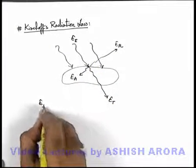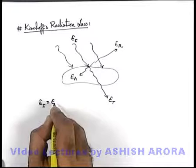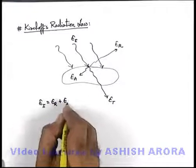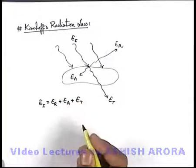And total energy which is incident can be written as E_i equals E_r plus E_a plus E_t, as total energy is conserved.